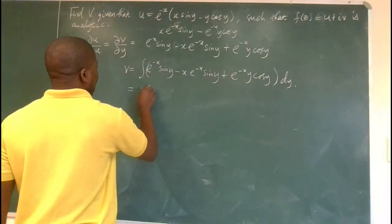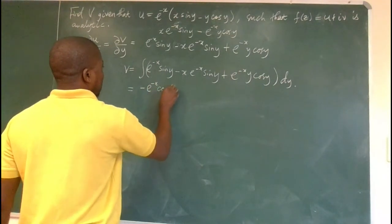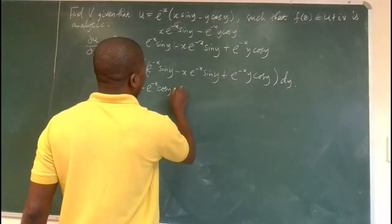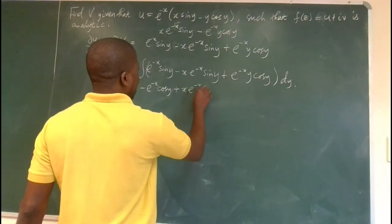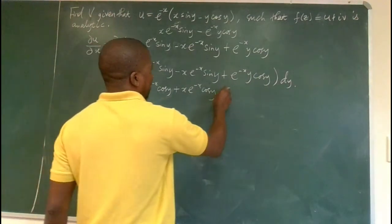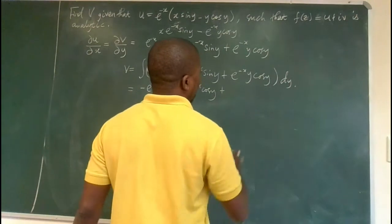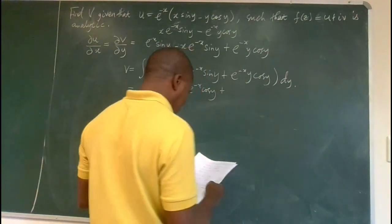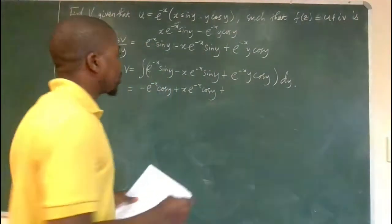So the first term integrates to -e^(-x)cos(y), and the second term gives +xe^(-x)cos(y). Then for the integral of e^(-x)y·cos(y) with respect to y, we need to work this out.